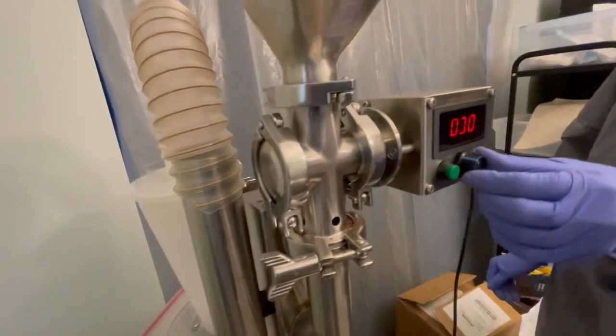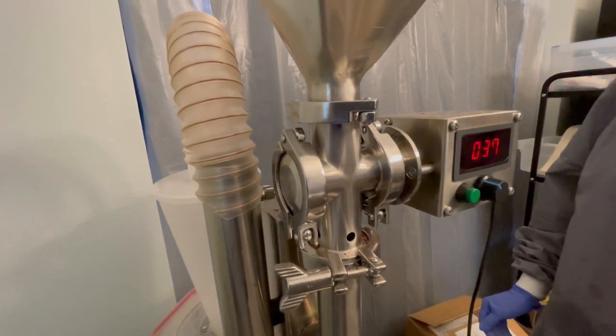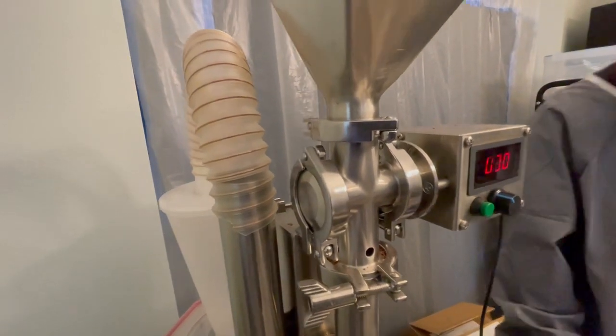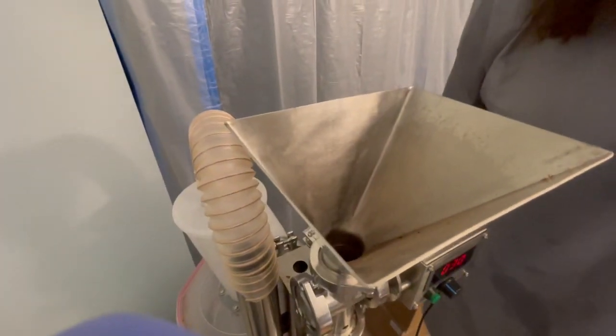First, there's a metering device up here. They recommended setting that at 30. We were doing it at 50. So we're probably going a little too fast as far as it allows the beans or the cracked beans to come down through here.